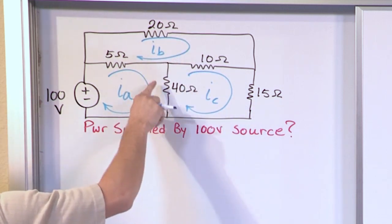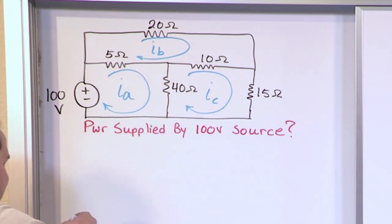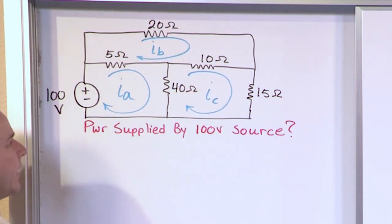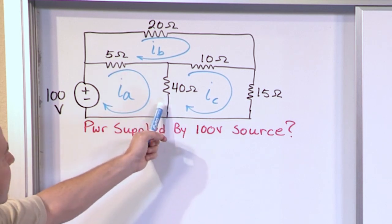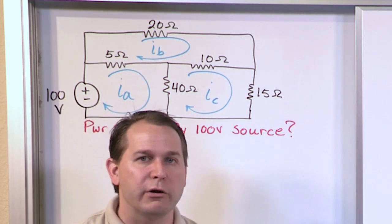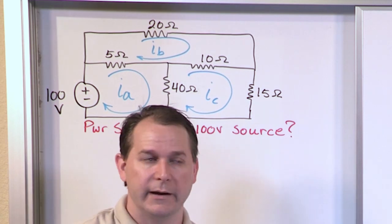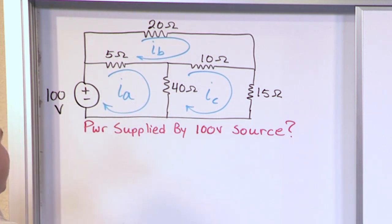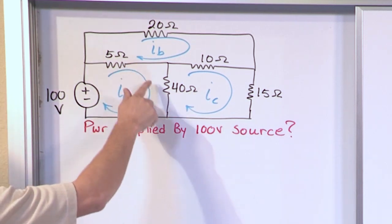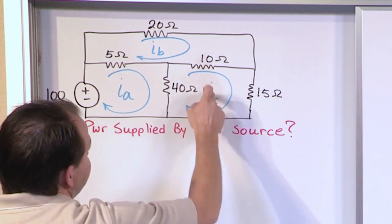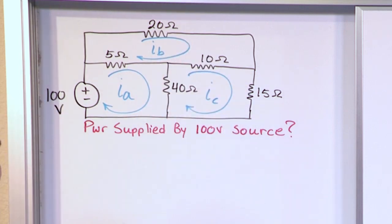When you force yourself to draw the mesh current directions, it helps you visualize what you're doing as you go around the circuit. For example, when I get to a shared leg, I'm going to have to subtract two currents, and drawing the directions helps me visualize which way the mesh currents are going. Don't skip that step — always draw the circles for A, B, and C before writing your equations.